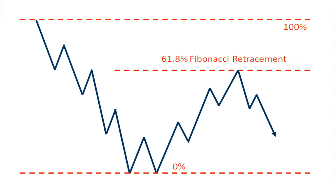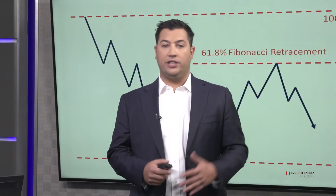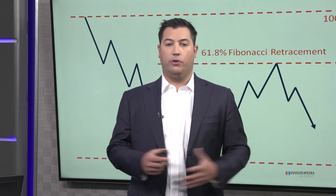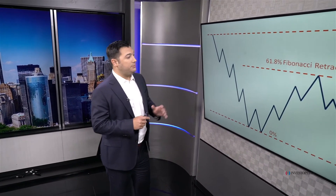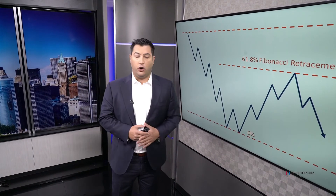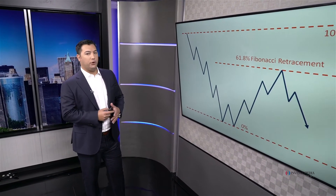When markets are trending, they correct that trend — uptrends correct to the downside, downtrends correct to the upside. These are just normal market behaviors that we're fully aware of. In Fibonacci, we can use this math to come up with retracement targets.